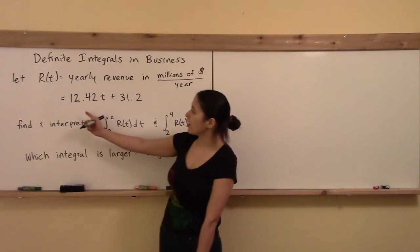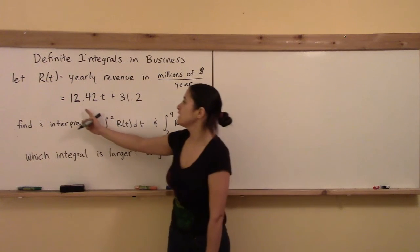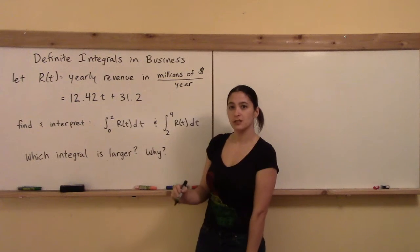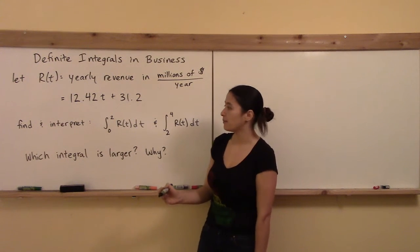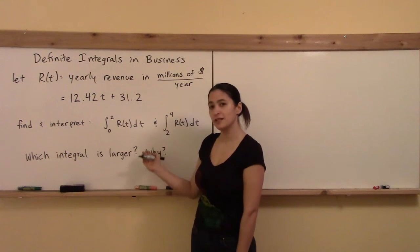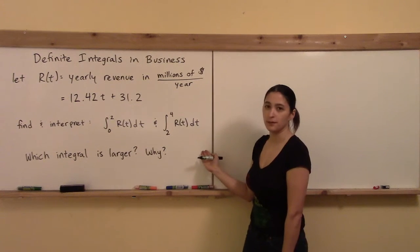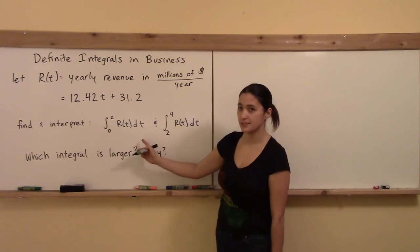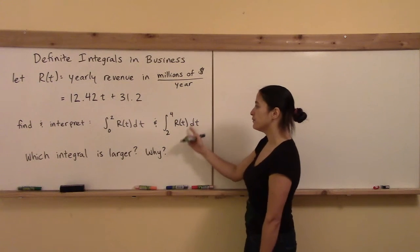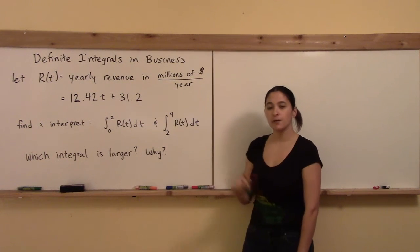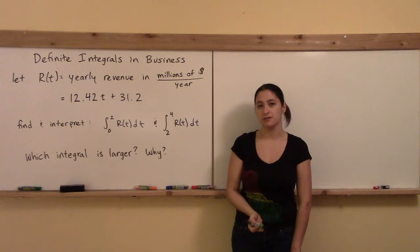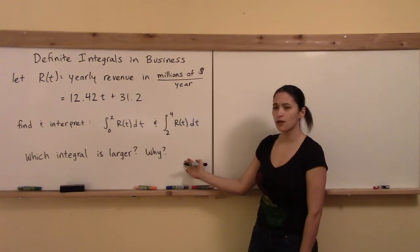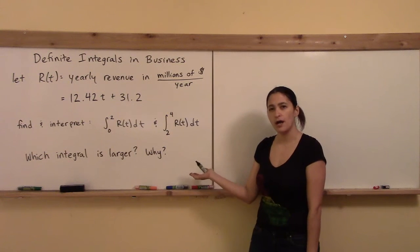Let's say this function R(t) is given to us as 12.42t + 31.2, so we have a linear function for our model. Let's find these quantities: the integral from 0 to 2 of R(t) dt, and the integral from 2 to 4 of R(t) dt. I want you to compute the actual values of both of these integrals. The question is: which integral is larger in its amount and why?